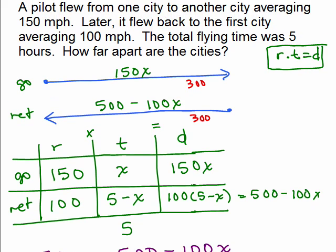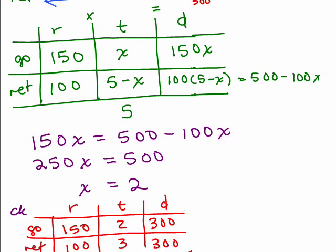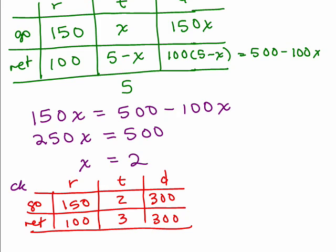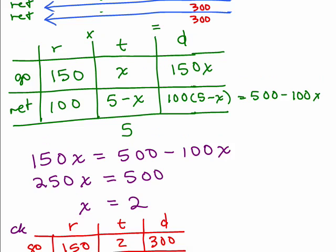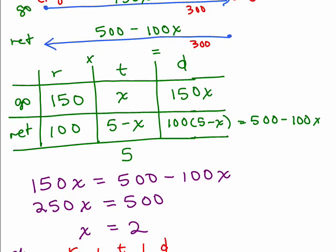Now, what's it ask? How far apart are the cities? Well, that's the distance from one city to the next, right? So here's the first city to the second city. This is city 1, city 2. You can see from the picture it's 300 or from the chart.